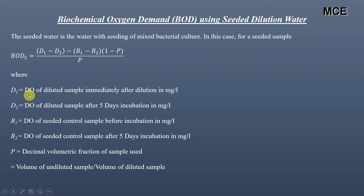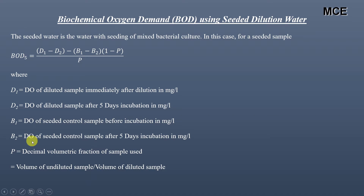D1 is the dissolved oxygen (DO) of the diluted sample immediately after dilution, in mg/L. D2 is the DO of the diluted sample after 5 days incubation, in mg/L. B1 is the DO of the seeded control sample before incubation, in mg/L. B2 is the DO of the seeded control sample after 5 days incubation, in mg/L. P is the decimal volumetric fraction of sample used, equal to the volume of undiluted waste water divided by the volume of the diluted sample.